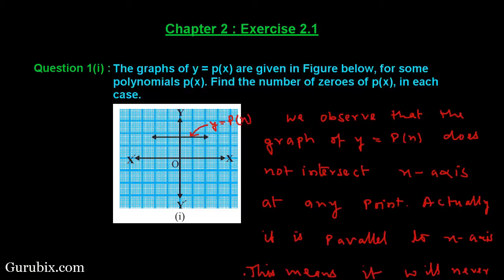The question is as follows: the graph of y = p(x) is given below. This is the graph of y = p(x). For some polynomial p(x), find the number of zeros of p(x) by just observing the graph. This straight line is the graph of y = p(x).